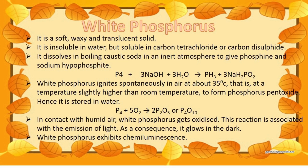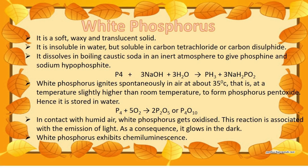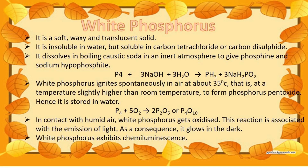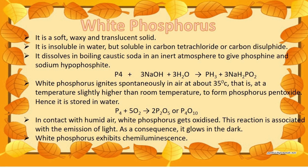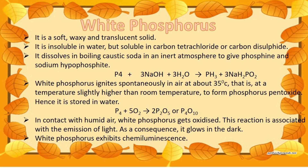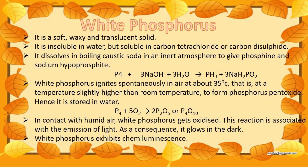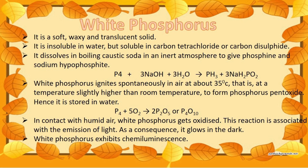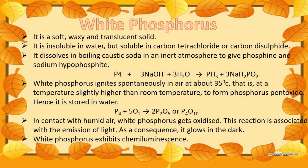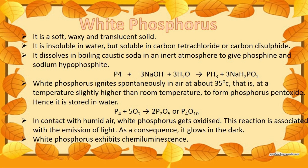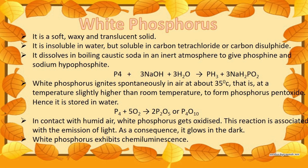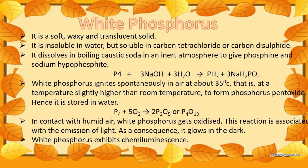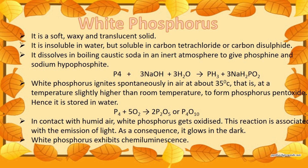White phosphorus is a soft, waxy, and translucent solid. It is insoluble in water but soluble in organic solvents like carbon tetrachloride or carbon disulfide. It dissolves in boiling caustic soda in an inert atmosphere to give phosphine and sodium hypophosphite.